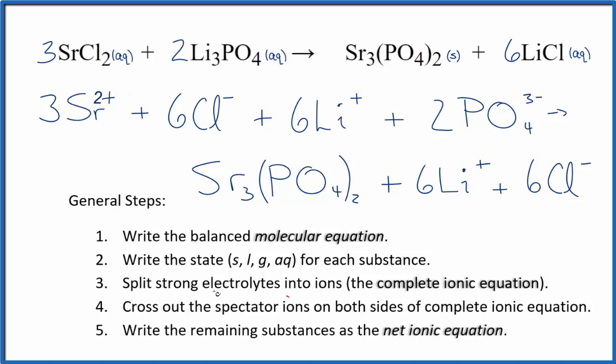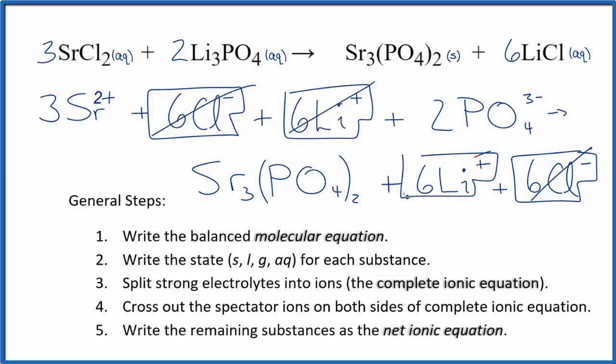So now we can cross out spectator ions. They're on both sides of the complete ionic equation. So the reactants up here, I can see six chloride ions. And again in the product. So these are spectator ions. Let's get rid of those. Six lithium ions here. And in the product, six lithium ions. Let's cross those out.